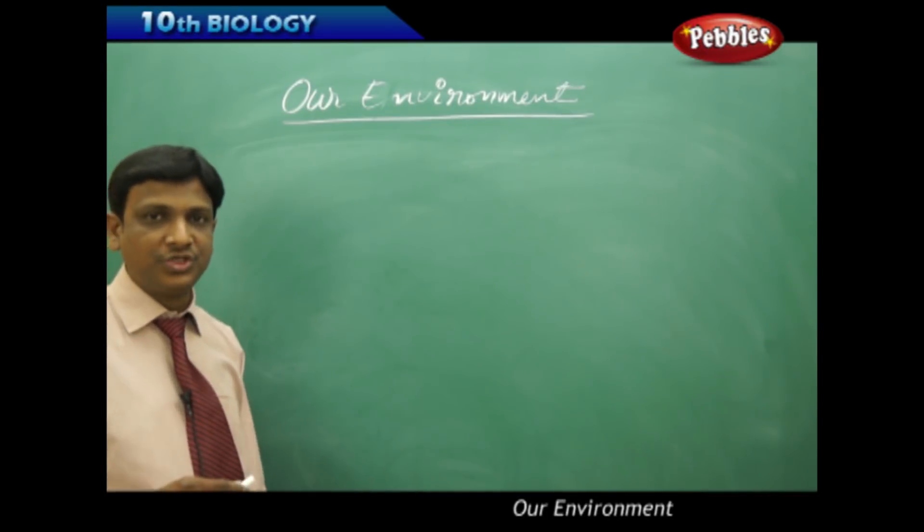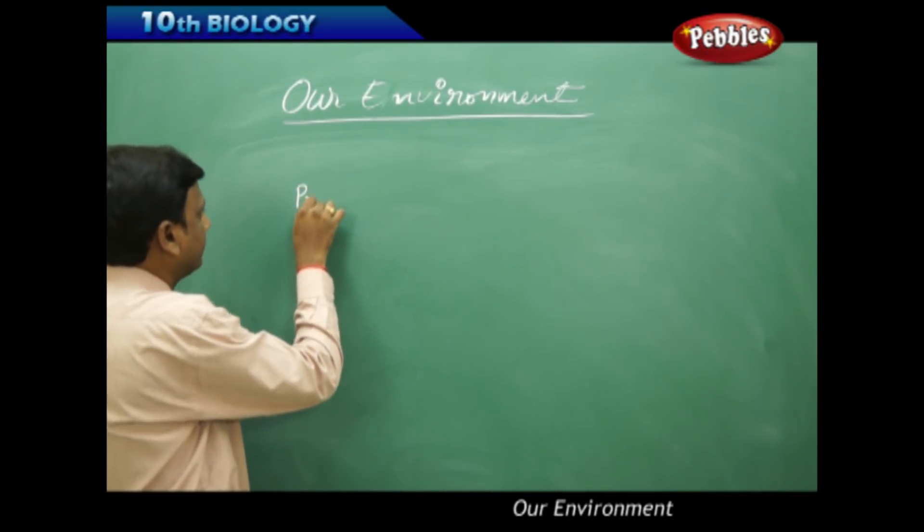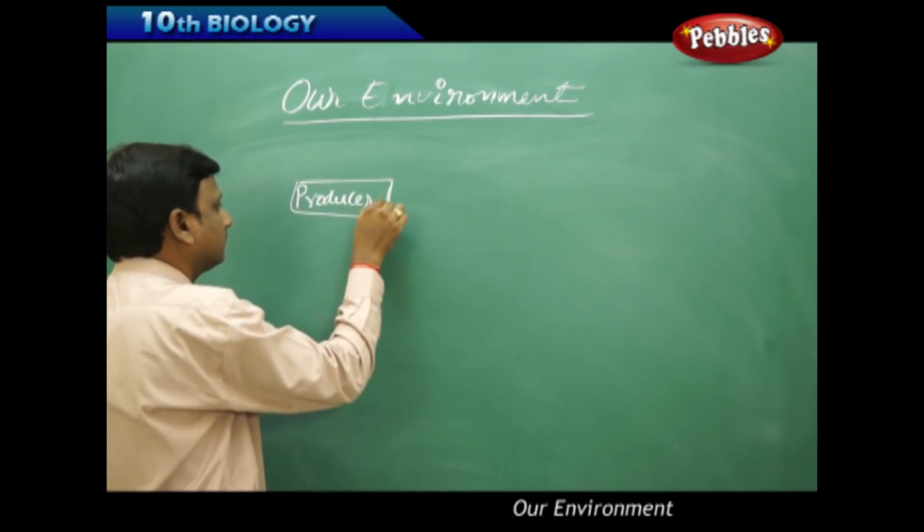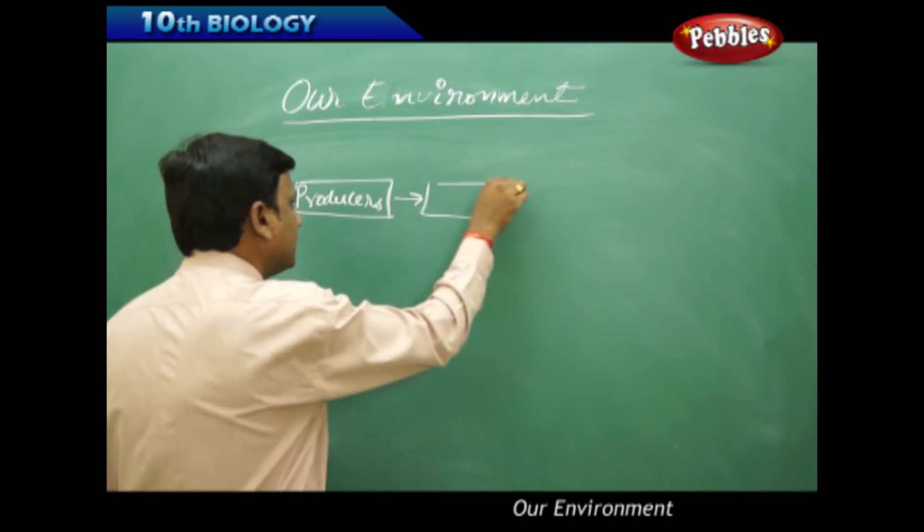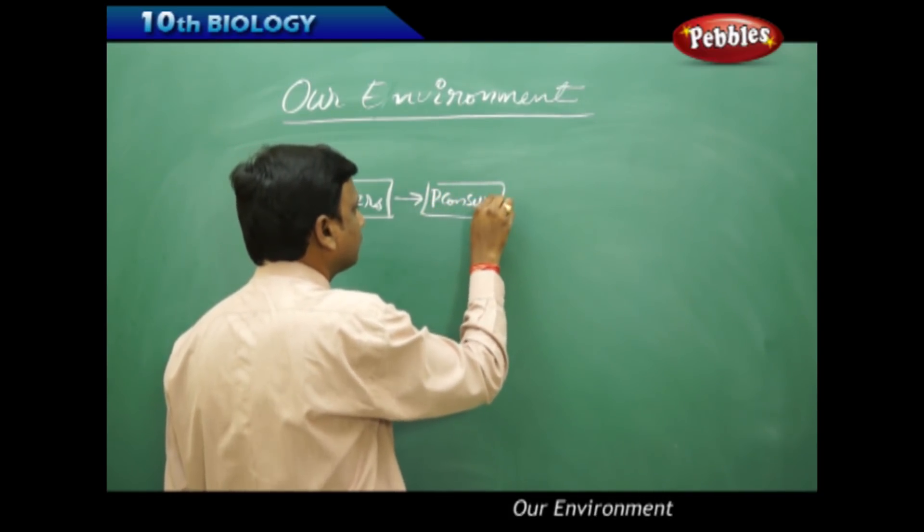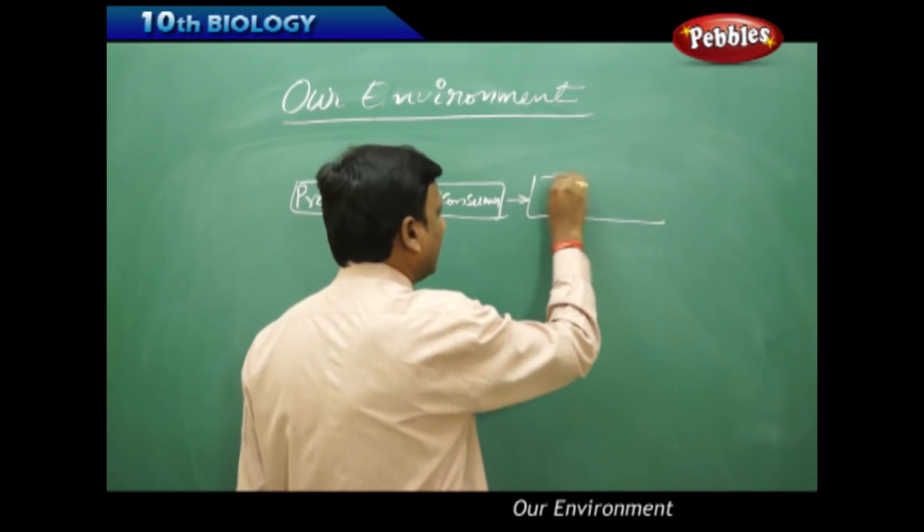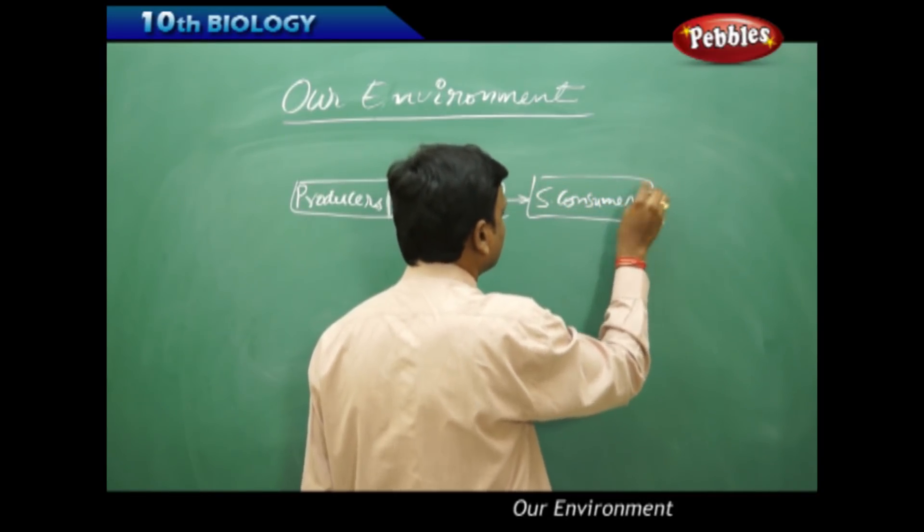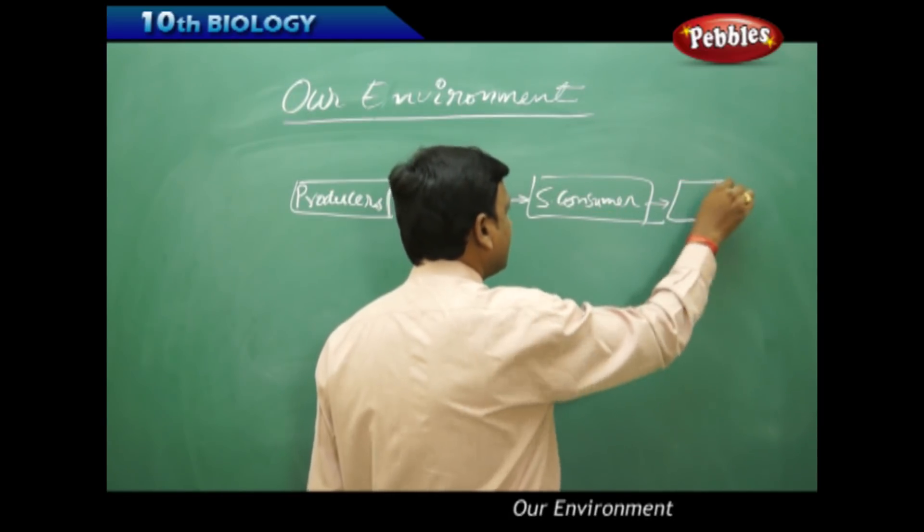If you observe a food chain, you will find producers, and producers to primary consumer and secondary consumer and tertiary consumer.